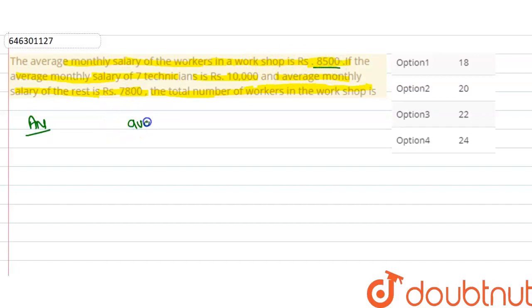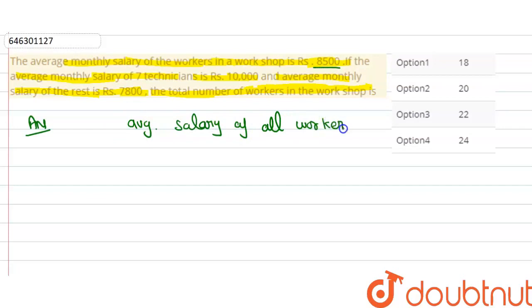तो यहाँ पर जो average salary of all workers है — मतलब जो सभी workers हैं, उन सभी की मिला के जो average salary है — वो है 8,500, okay? और question में यह नहीं बताया कि total कितने workers काम कर रहे हैं इस workshop में, okay?